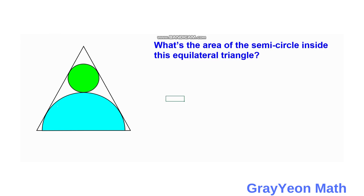We draw a line from the vertex of the triangle downwards to the base of the triangle. Next, we draw a radius of this semicircle, and that radius should be perpendicular to the triangle because they are mutually tangent — and to the right also. This forms two right triangles. We can also draw a line from the center of the green circle to the side of the equilateral triangle, as they are also mutually tangent, and therefore there should be a right angle.